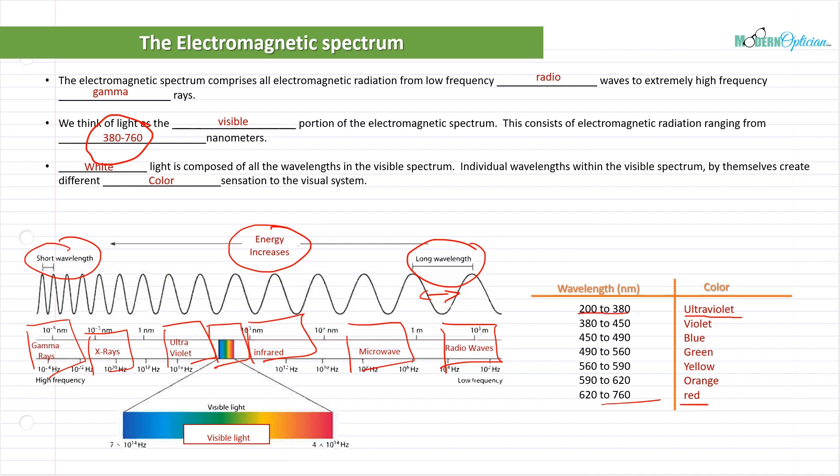And notice how they're low wavelengths. Remember, low wavelength equals high energy equals bad news. But notice here how violet and blue fall in the lower wavelength areas.